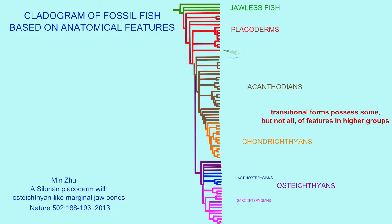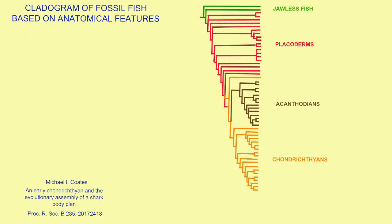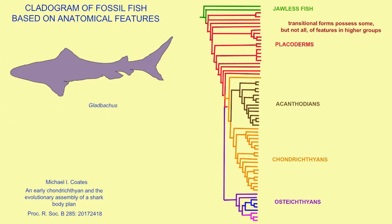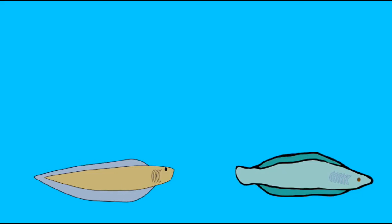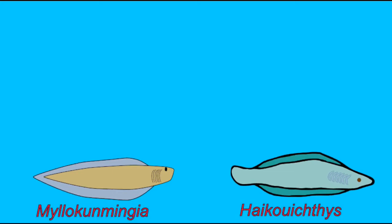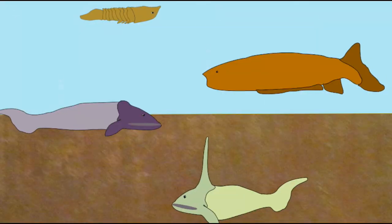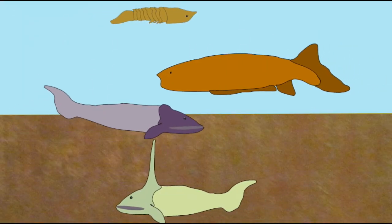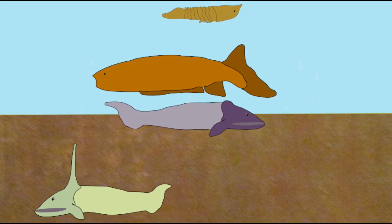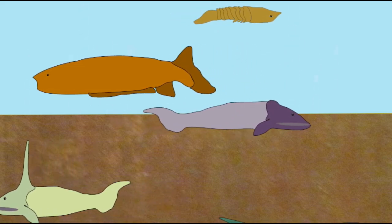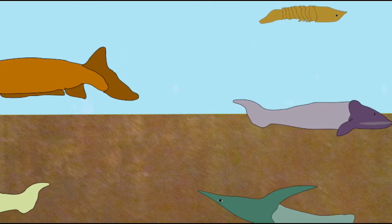Not only do these analyses demonstrate a relationship between groups, but also the notion that complexity is built in stages. Jawless fish are related to other fish, but to varying degrees. The earliest jawless fish are the most primitive, and later jawless fish are more closely related to the jawed fish, having developed bone and pectoral fins.